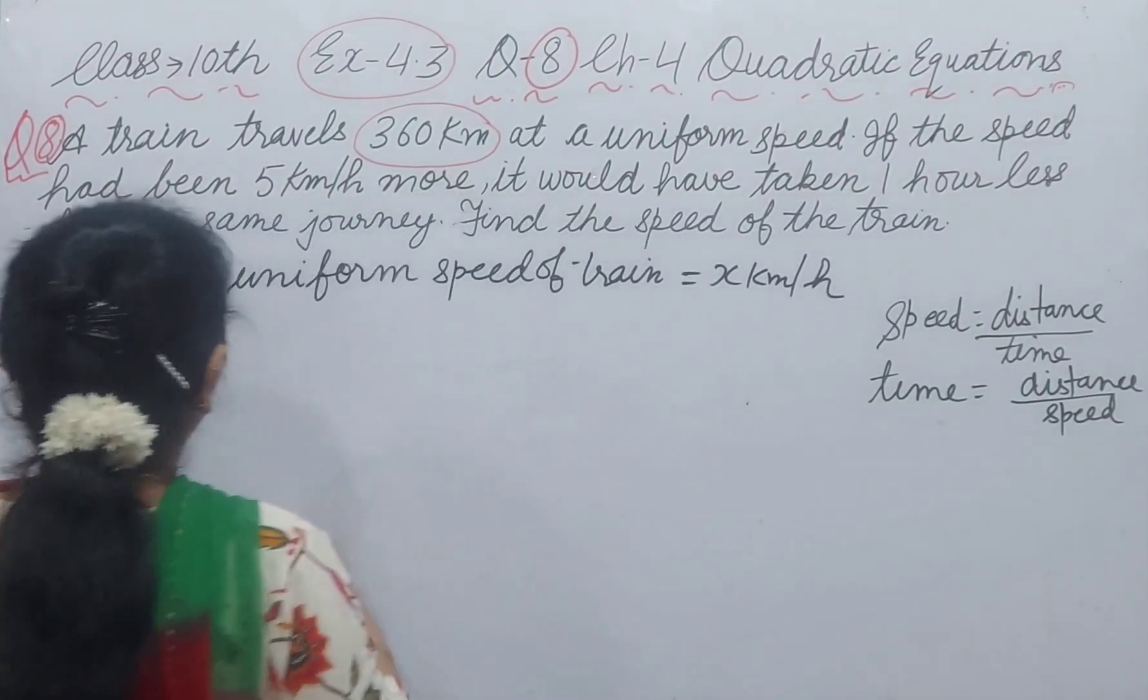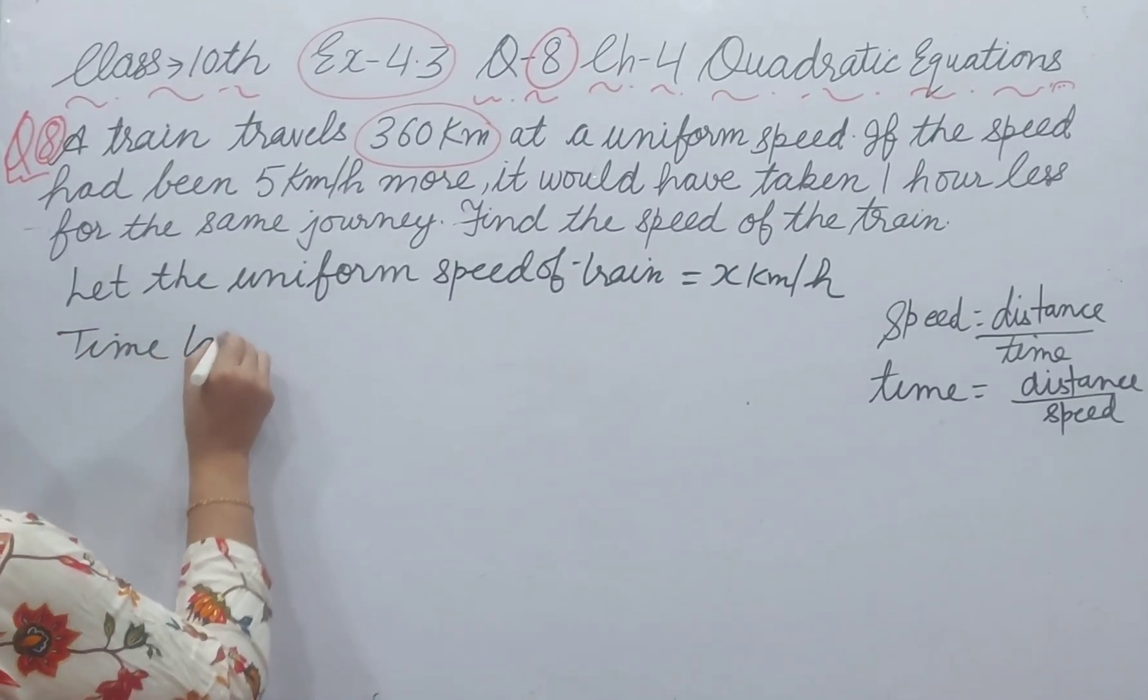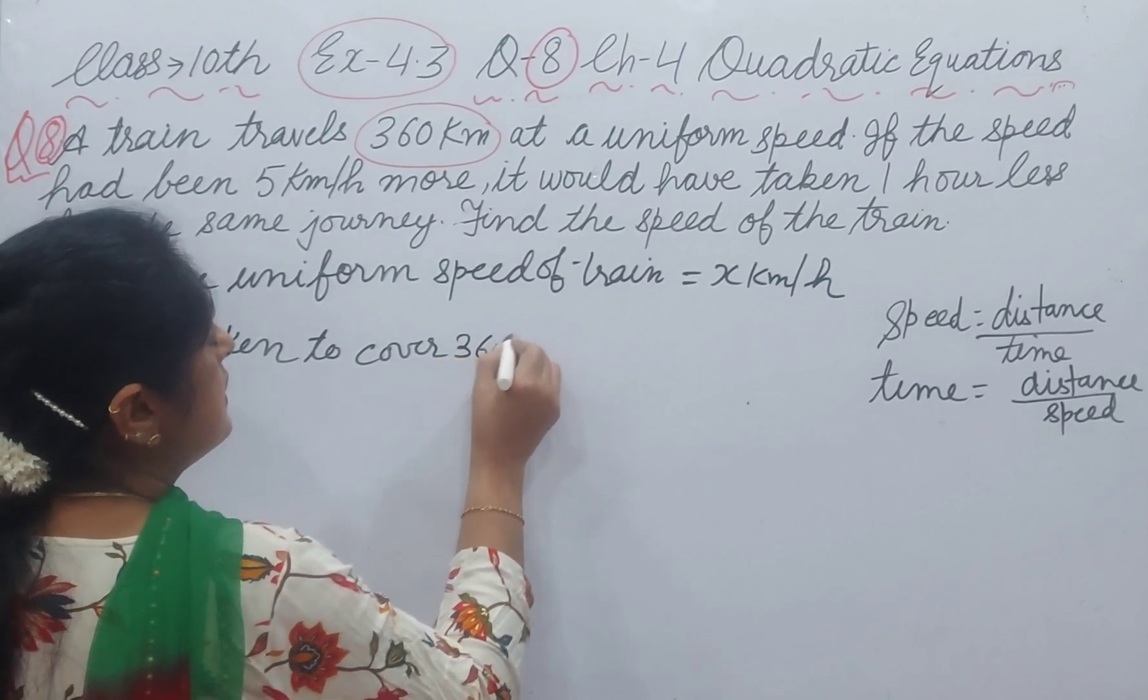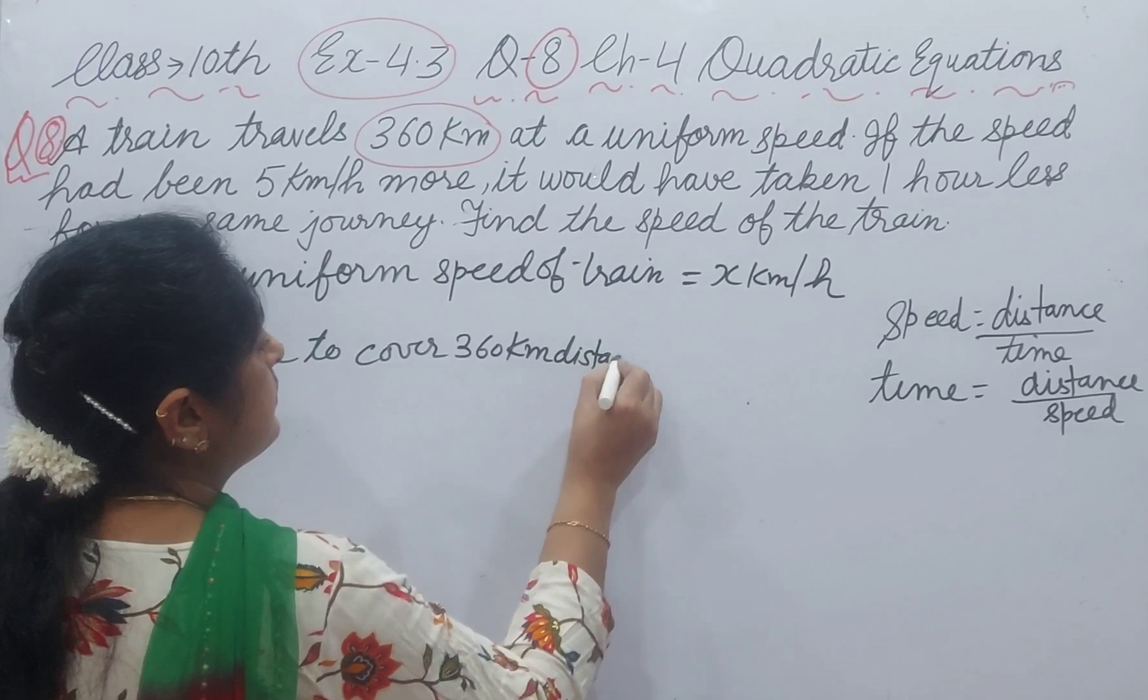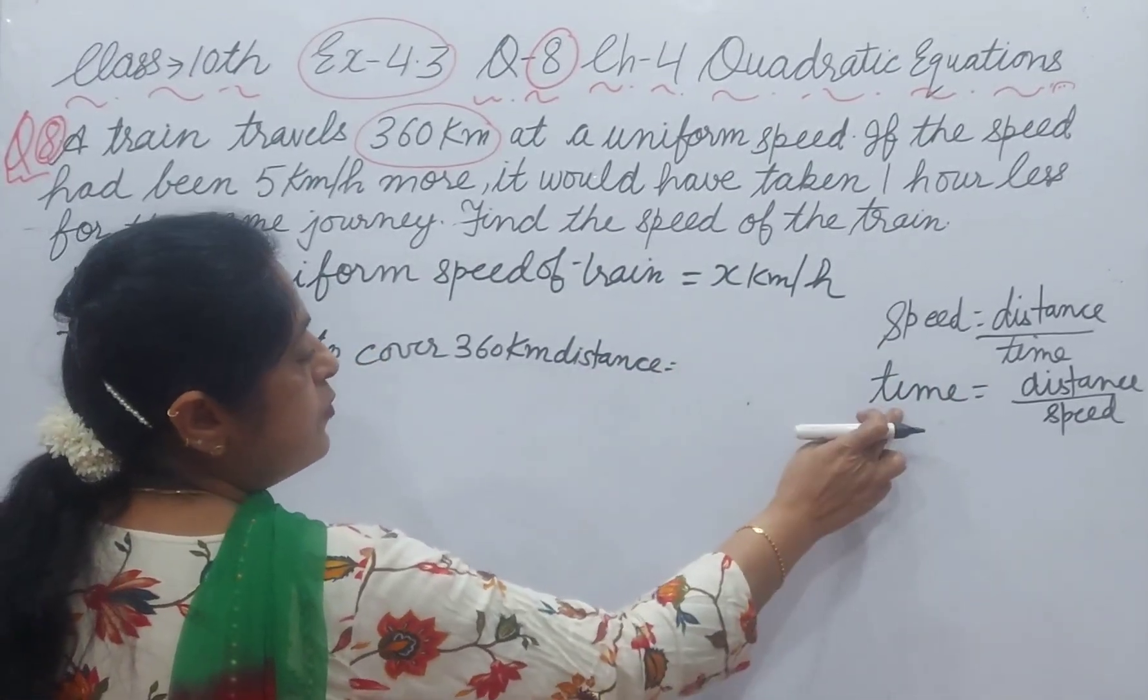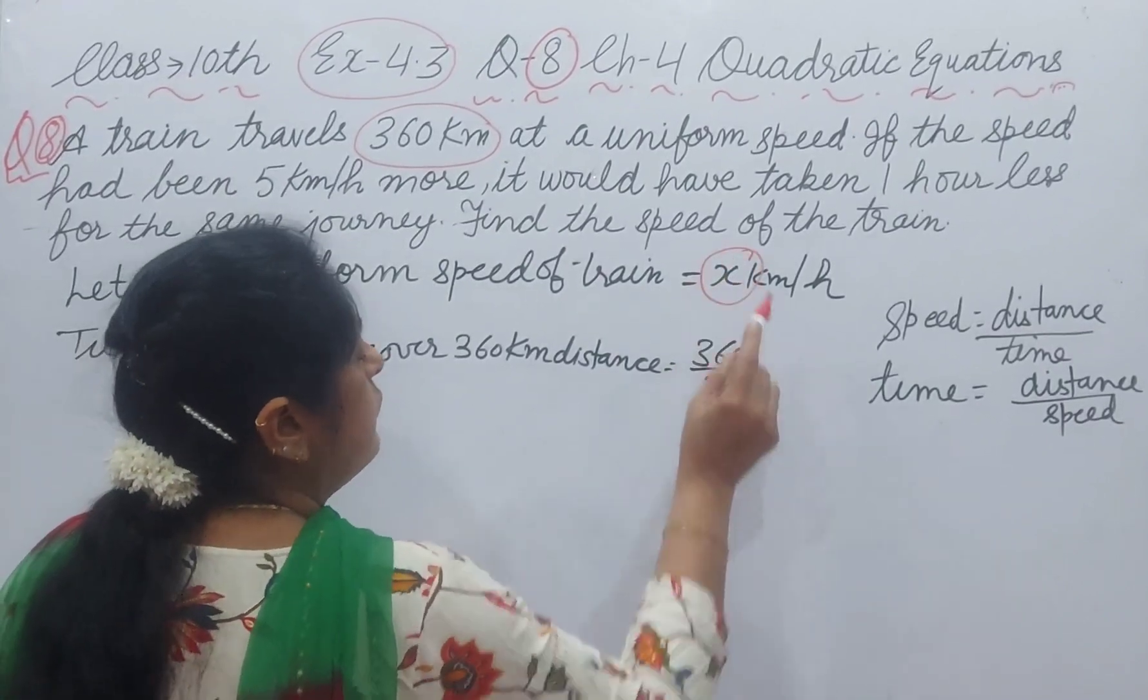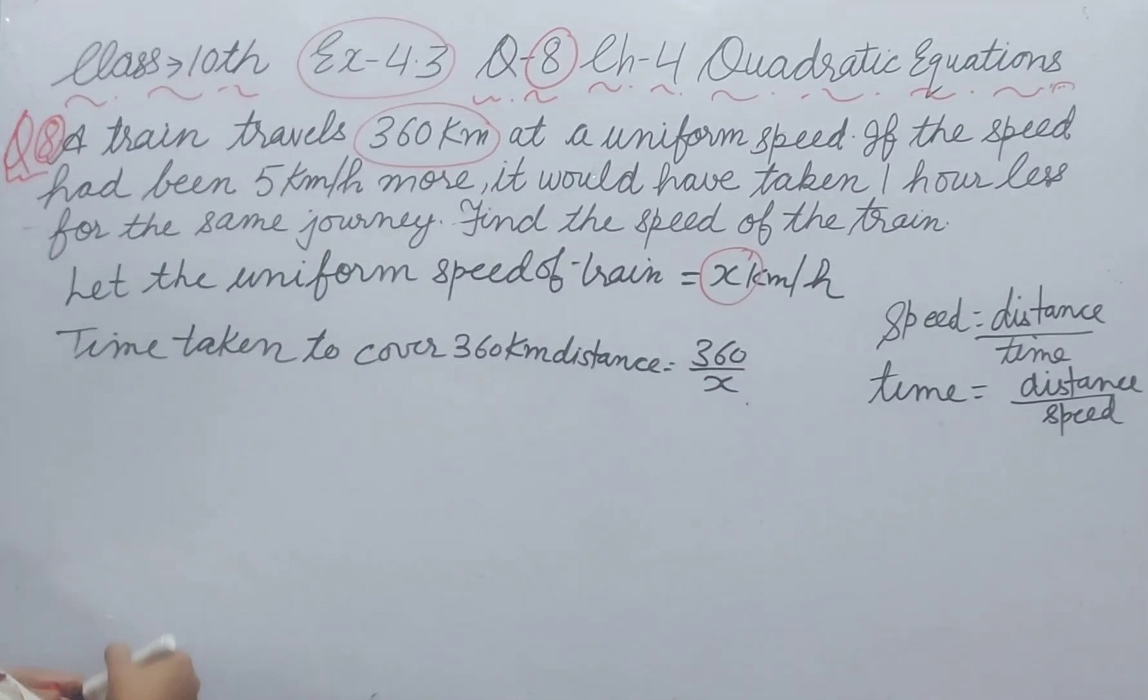Now, time taken to cover 360 km distance. Time formula is distance over speed. Distance is 360 and speed we assume as x, and we have put x in this formula.